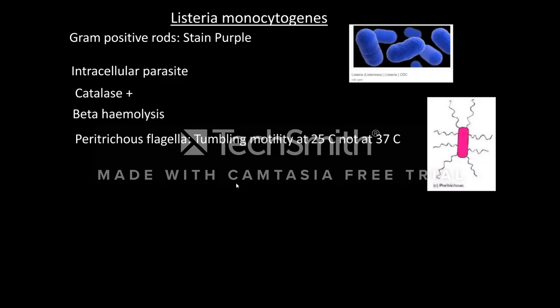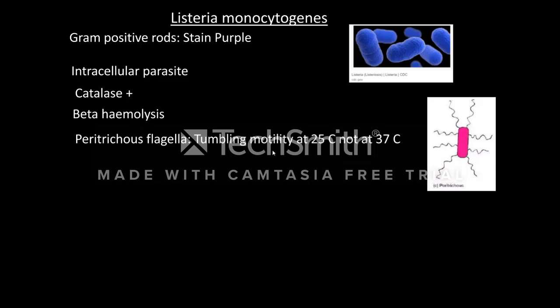To summarize the properties of Listeria monocytogenes: it is a gram-positive bacteria that stains purple; it is a facultative intracellular parasite; it is catalase positive; it forms a zone of beta hemolysis in blood agar medium; and it has peritrichous flagella with tumbling motility at 25°C but not at human body temperature.